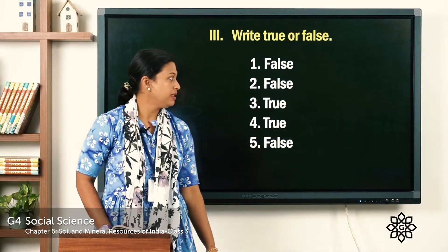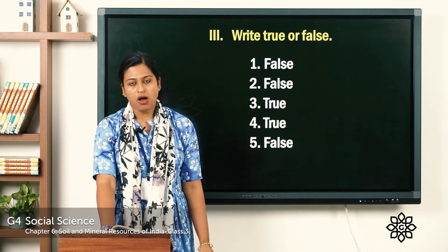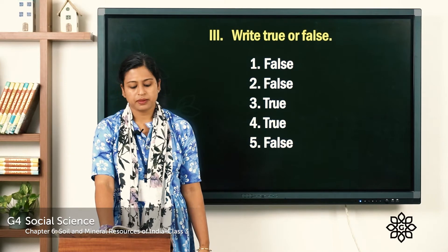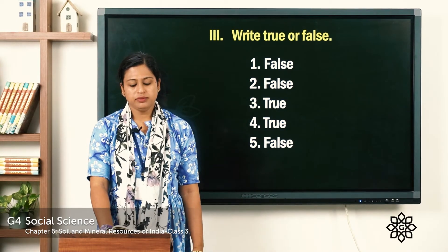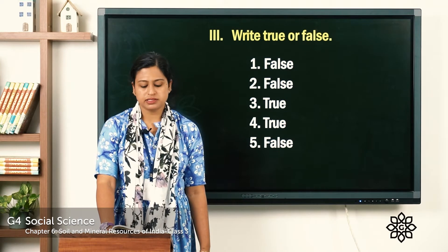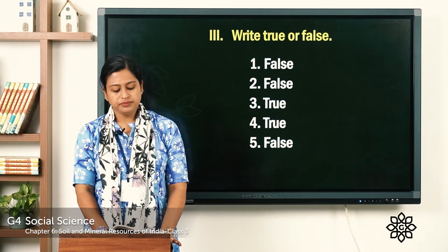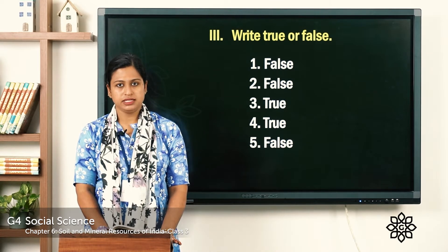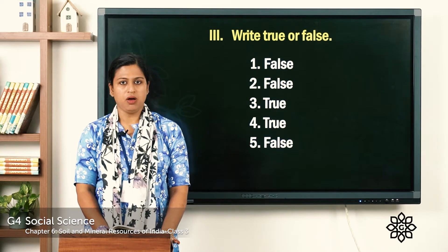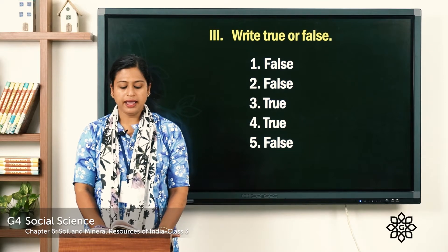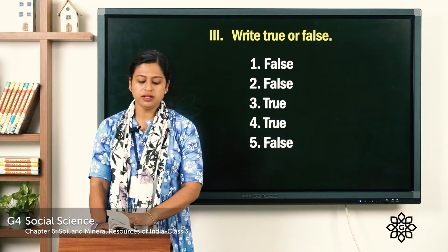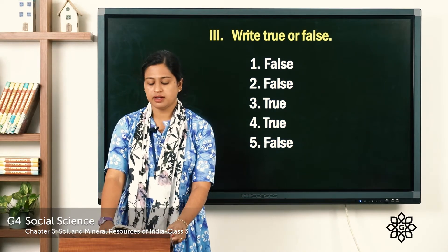Now let's check the answers. The first one — all minerals are metals — is false. The second one — limestone is found in Jharkhand — is false. The third one — coal is used for cooking and heating — is true. The fourth — petroleum is a mineral oil — is true. The fifth — iron is found in New Delhi — is false; iron is found in Jharkhand, Odisha, Chhattisgarh and Karnataka.